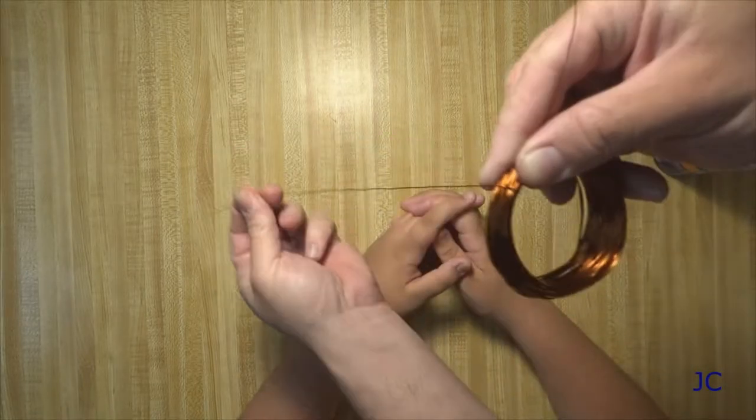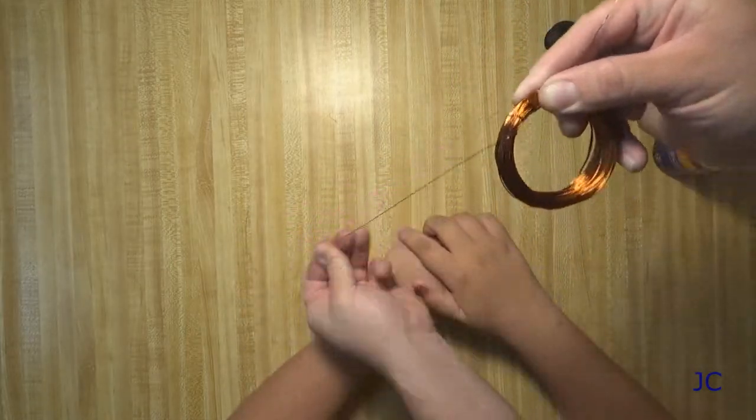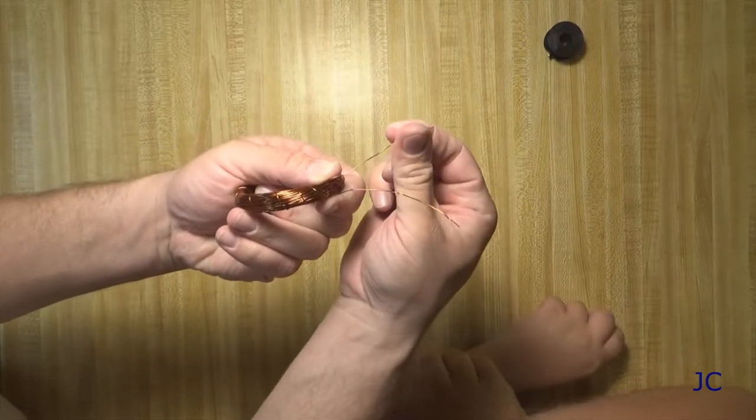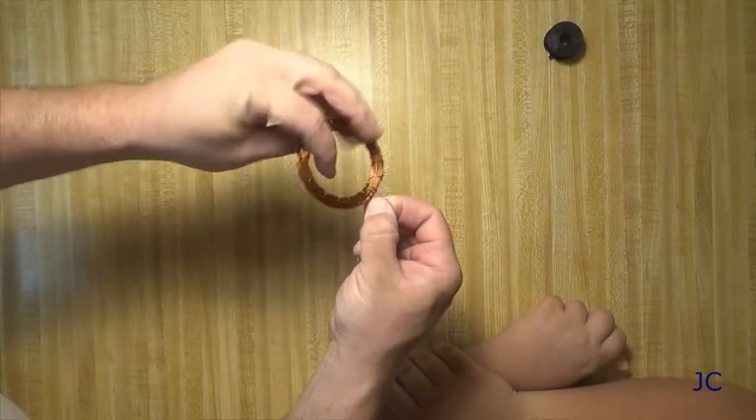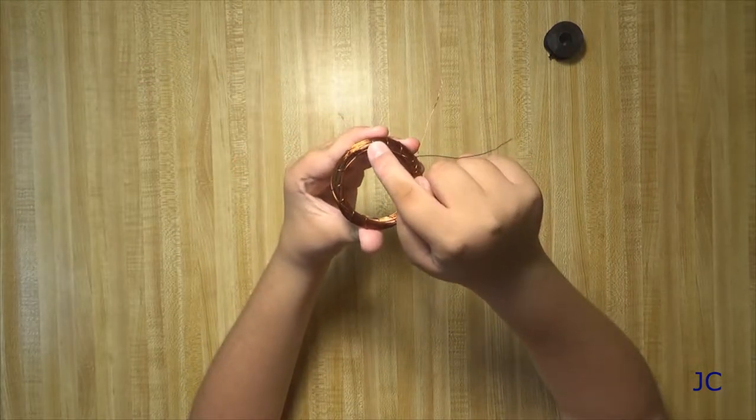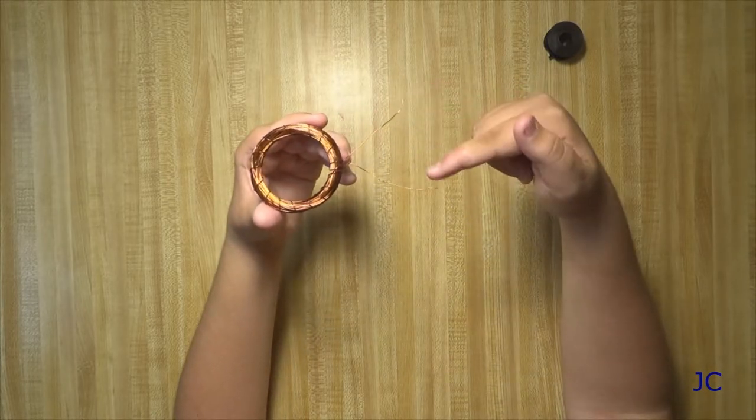You really want this field coil to be as tight as you can. As you can see, I'm just wrapping that wire around on itself to make sure that it is nice and tight. We're going to take the two wire ends and just kind of twist them together to lock everything in place. We'll wind up using these wires to power the field coil. So we want to make sure that you've got about four inches sticking out. That way we have plenty to work with.